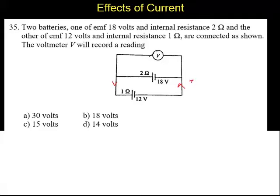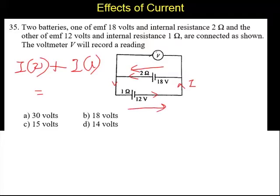Let the current be I. If the current is flowing like this, it is a 2 ohms resistor, then I into 2 ohms plus the current is passing through the 1 ohm resistor. I into 1 ohm should be equal to the difference between these two batteries because in this battery current is flowing like this, in this battery current is flowing. So it is 18 minus 12.